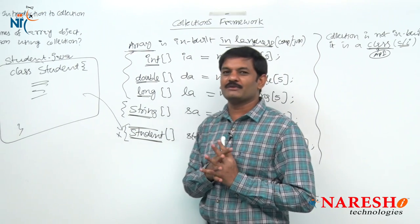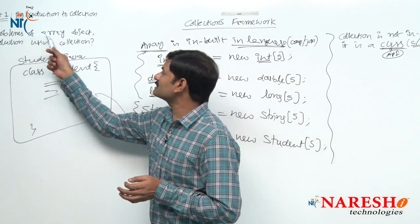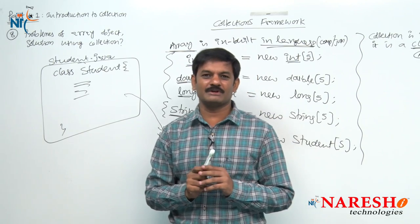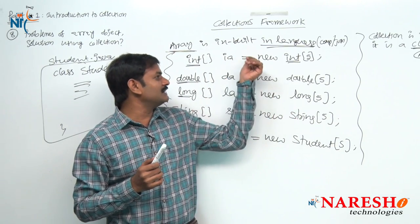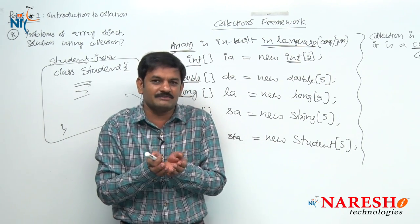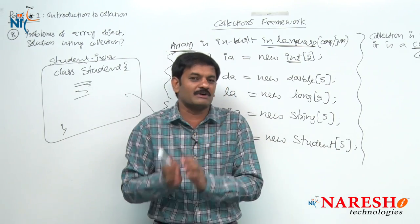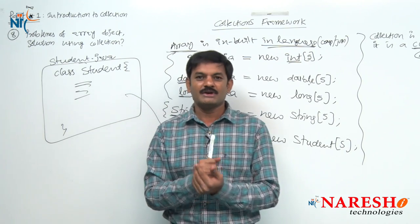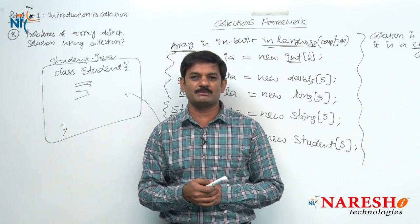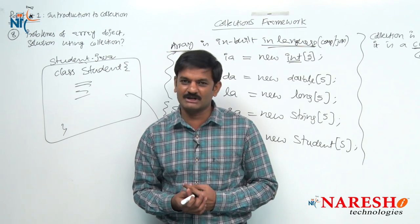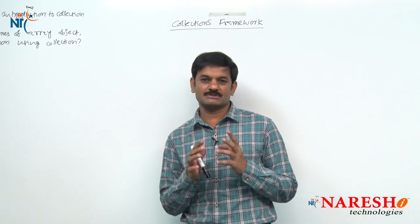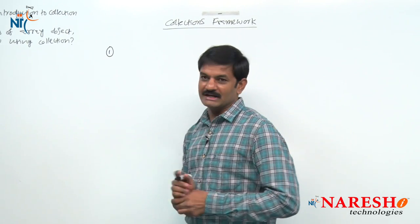Array has totally four problems. First: type problem. Second: size problem. Third: storing order problem. Fourth: operations problem. To solve these four problems, what came into picture? Collection API — collection classes came into picture. Let us try to understand the meaning of type problem.